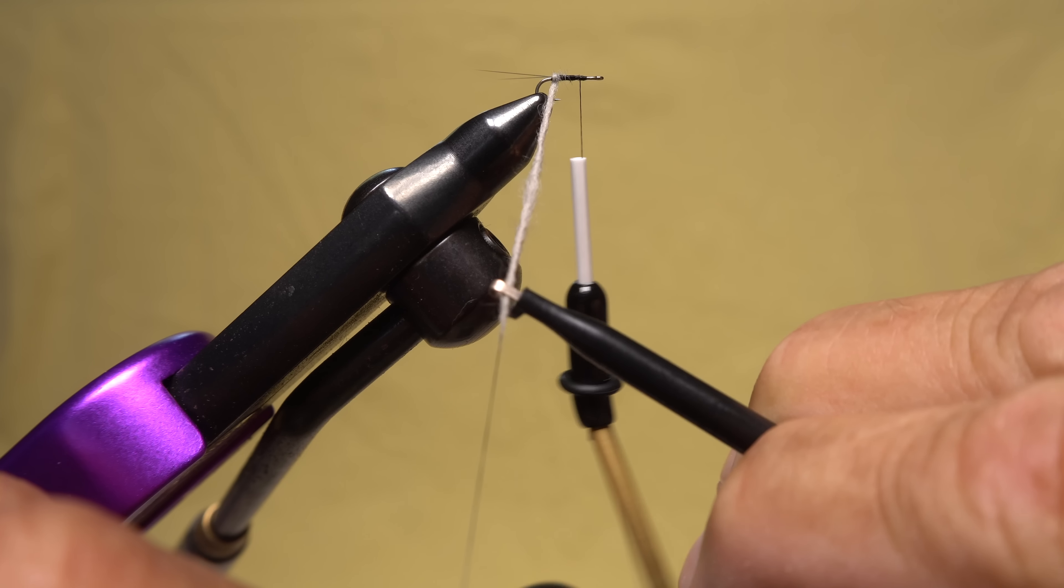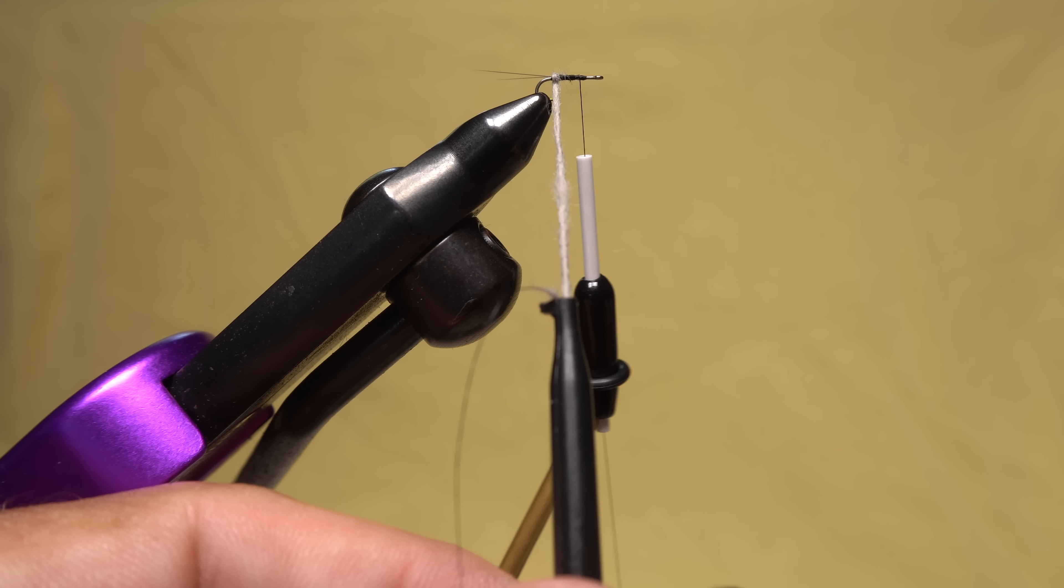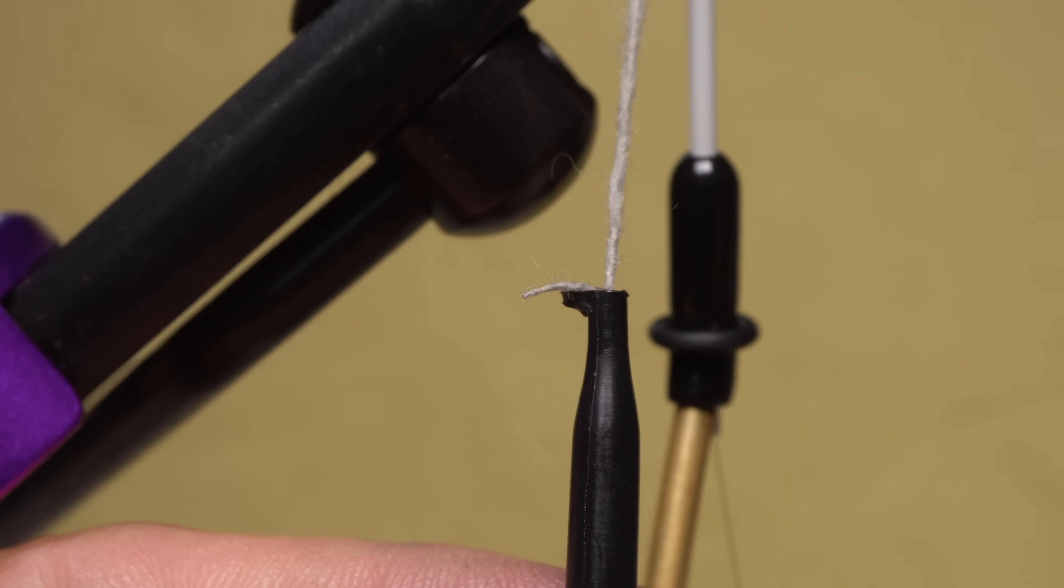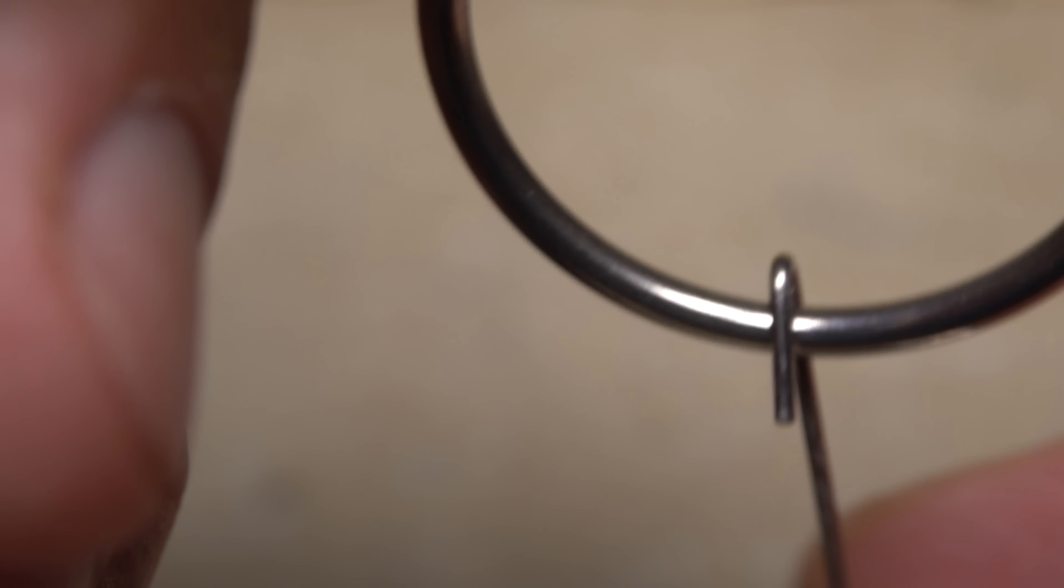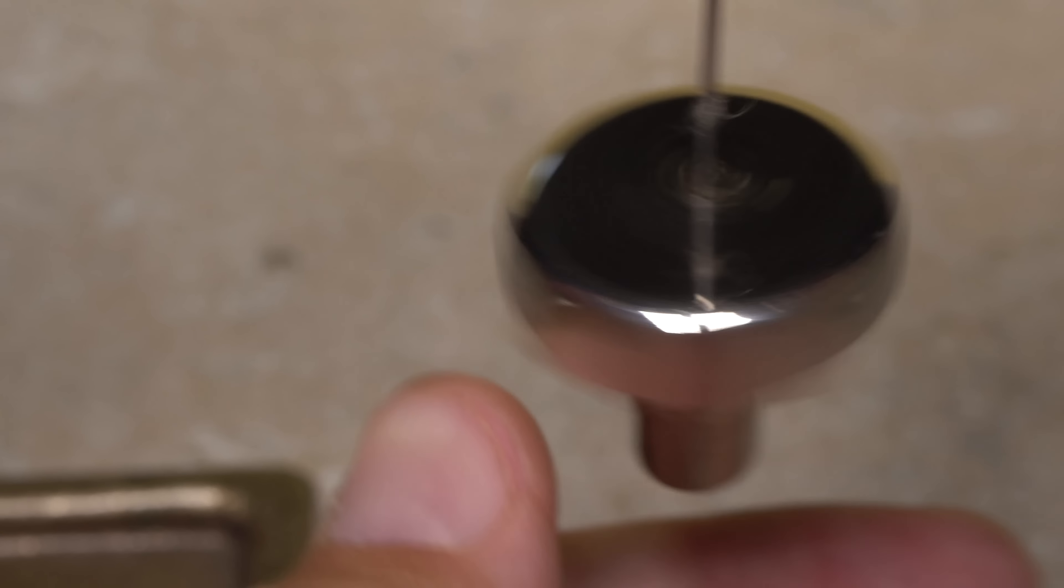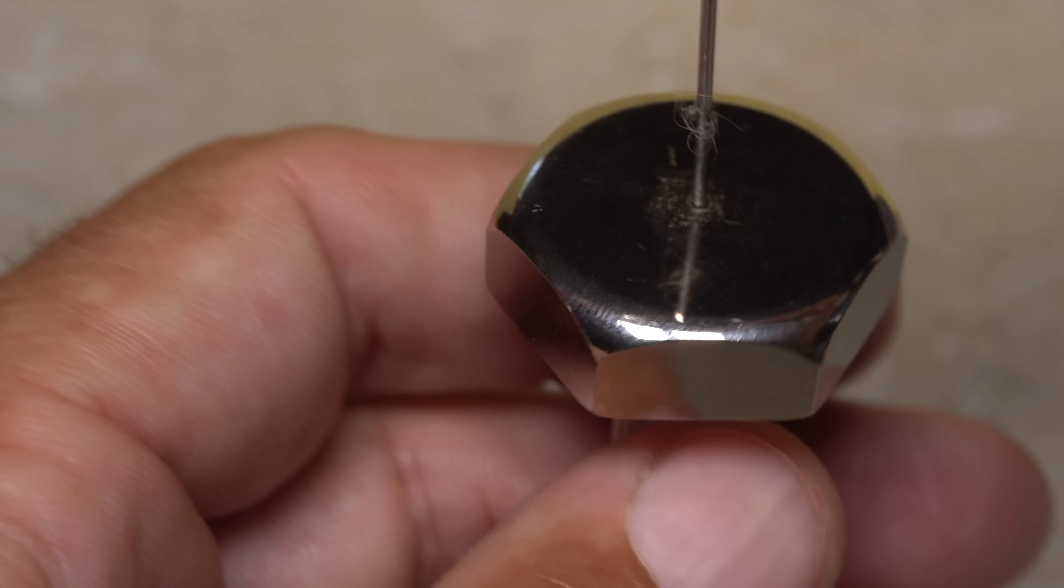Plunger-style hackle pliers with a loop on them or similar are needed for the next step. Secure the pliers to the noodle a short distance up on the dubbing, then snip the excess thread off close. Pick up a dubbing whorl and hook it onto the hackle pliers, then give the whorl a good clockwise spin.